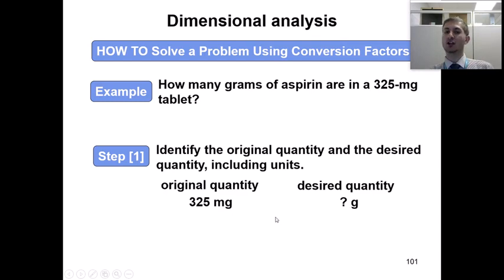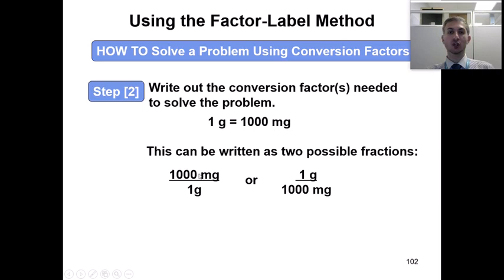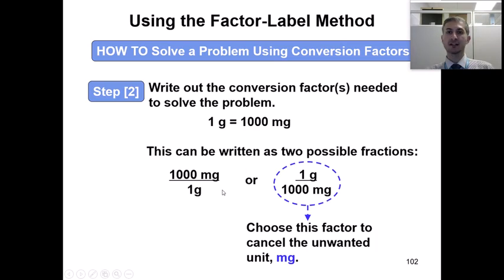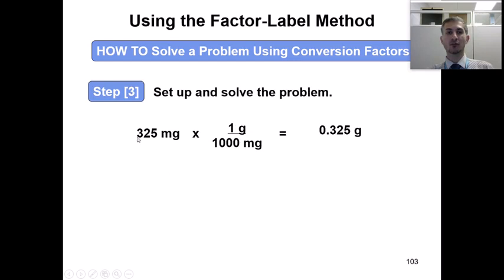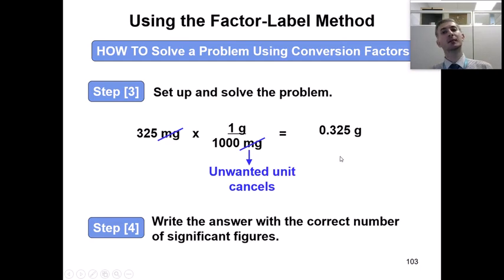To do that we need to write a conversion factor. We know that 1000 milligrams is the same as 1 gram. This is an equivalency we need to memorize — it is not given because it comes from a prefix, not a conversion factor table. We may write this equivalency two ways: 1 gram on the top and 1000 milligrams on the bottom, or vice versa. We start with milligrams, so we write milligrams on the bottom. So 325 milligrams multiplied by 1 gram over 1000 milligrams — milligram and milligram cancel out. We report our final answer with 3 sig figs, since we have 3 sig figs in 325. This is the technique we apply to solve our problems.